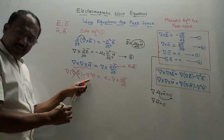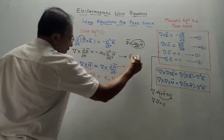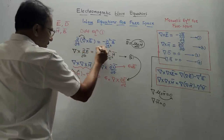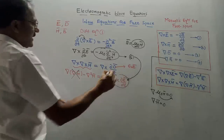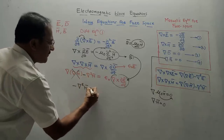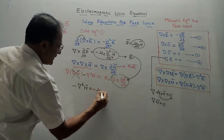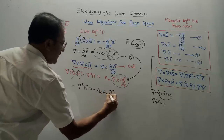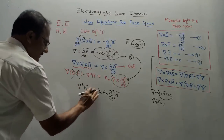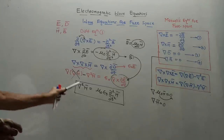We want everything in terms of H̄. For the RHS term ε₀ del × (∂Ē/∂t), we substitute equation 6. Both sides contain minus signs, so they become plus. The resulting wave equation for free space in terms of H̄ is: del²H̄ = μ₀ε₀ ∂²H̄/∂t².